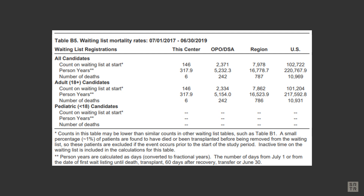In Table B5, we show how many candidates were on the list at the beginning of the observation period, how many person years accumulated by adding together all the time all candidates spent on the list, and finally, how many deaths occurred in that observation period.